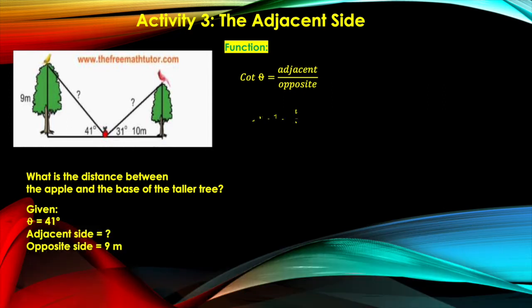Then we substitute the values. We have cotangent theta is cotangent 41 degrees equals A. I'm using small letter A here to represent the variable of the adjacent side, and then the opposite side is given at 9 meters. Then we do the math. So by cross multiplication, it's 9 cotangent 41 equals A. That should be the next line here.